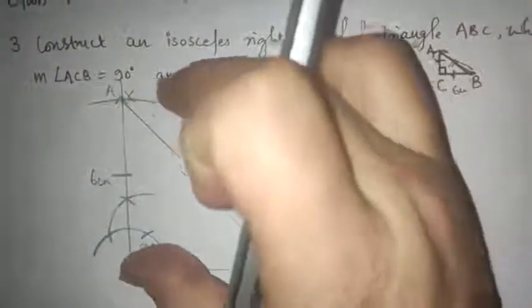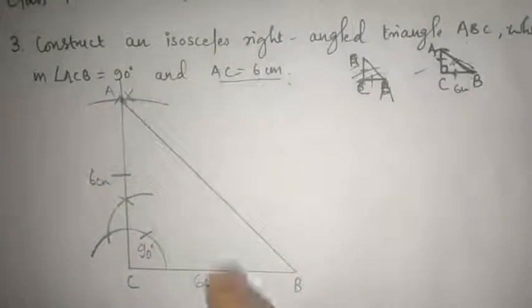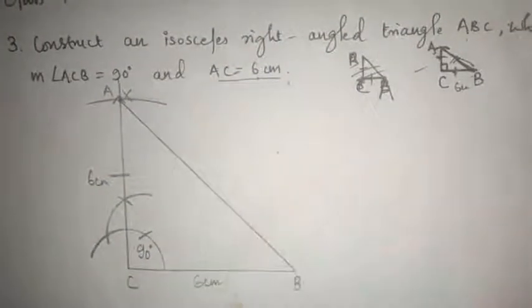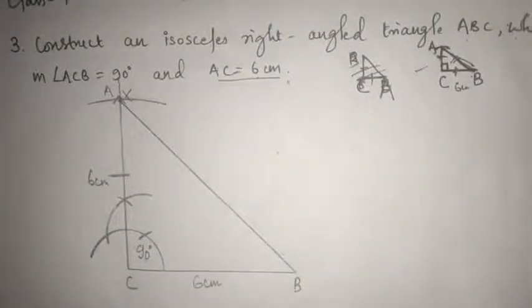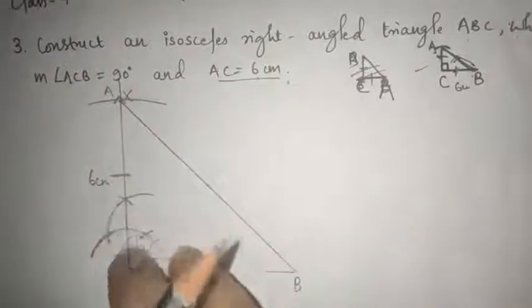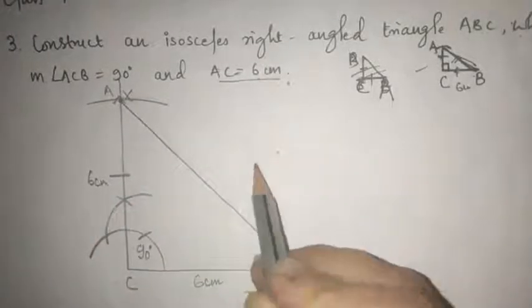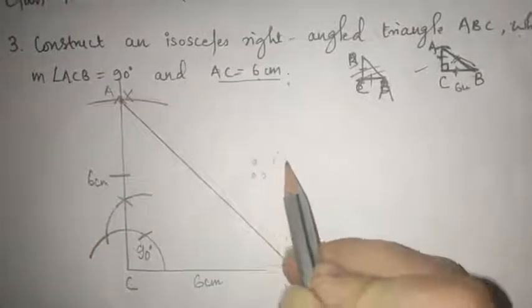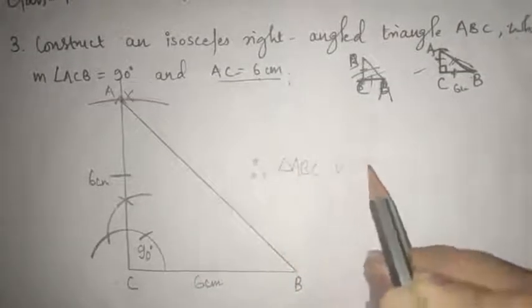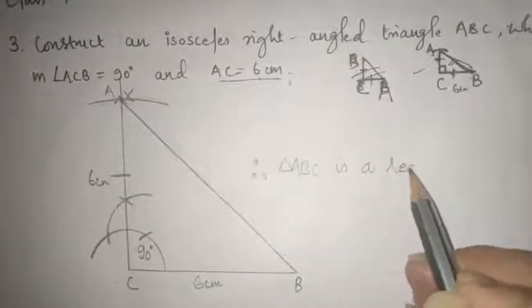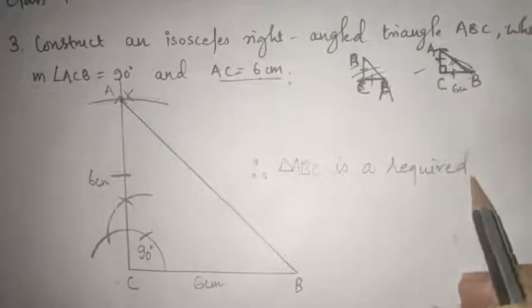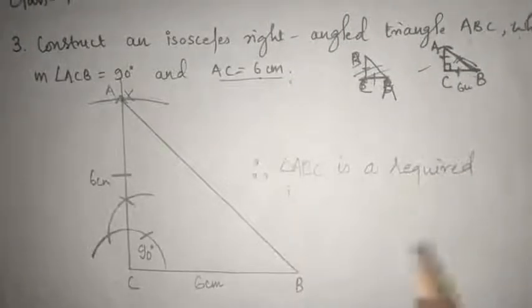So from here C to A, this is 6 centimeter. And the one which is here, it is not of 6 centimeter. So that we can say it is an isosceles triangle. So at the last you will write therefore triangle ABC is a required isosceles triangle.